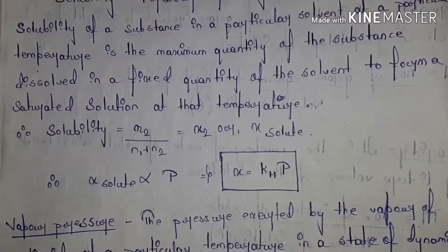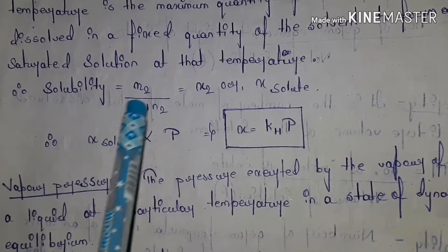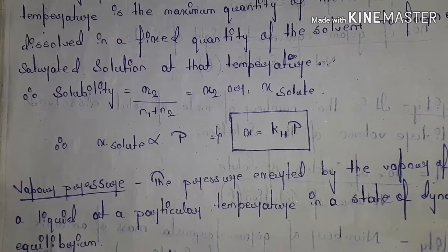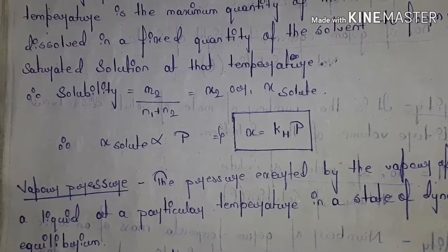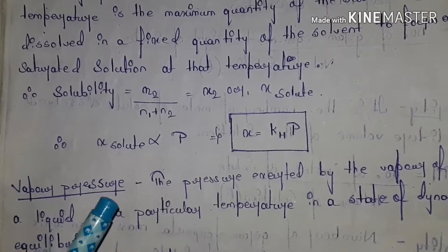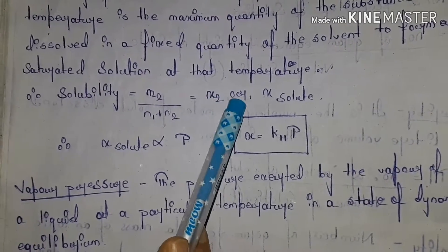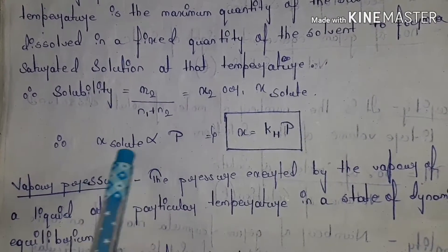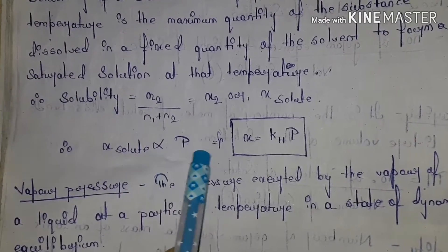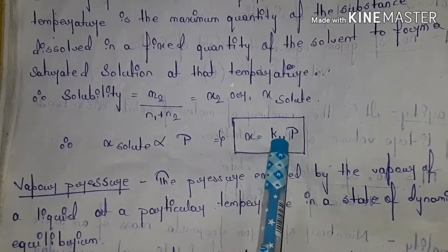In solutions, solute is represented as n₂ (number of moles of solute) and n₁ is the number of moles of solvent. n₁ + n₂ = number of moles of solution. Mole fraction of solute = n₂ / (n₁ + n₂) = X₂. This mole fraction X is directly proportional to pressure. To remove the proportionality sign: X = K_H × P, where K_H is Henry's constant.